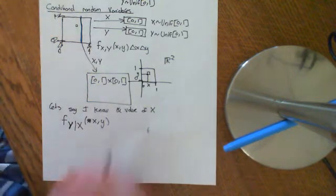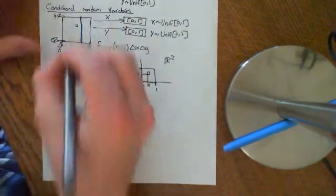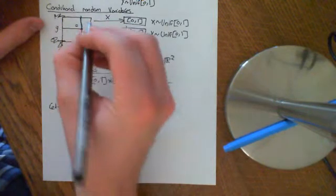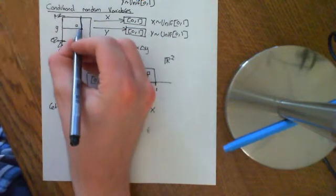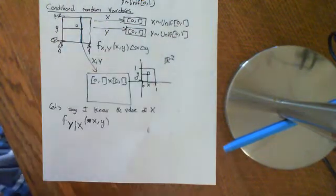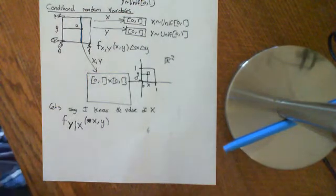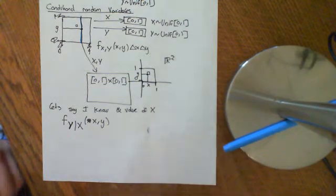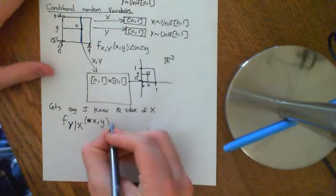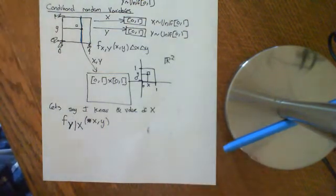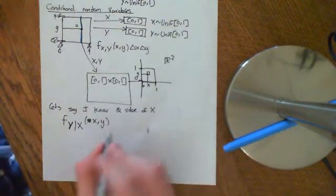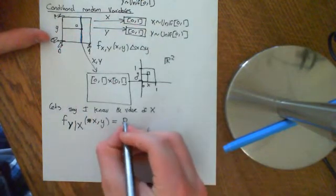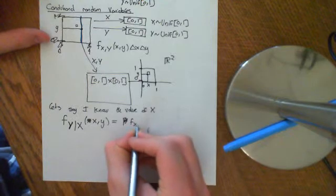Keep thinking about this as the infinitesimal version of probability. What we are asking is: if we know we're on this line, and I take a point with a certain y-coordinate, what's the infinitesimal probability that I'm at that point? This is completely analogous to the equations we saw for discrete random variables — and indeed for probability spaces more generally.